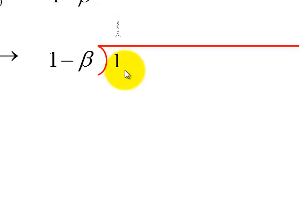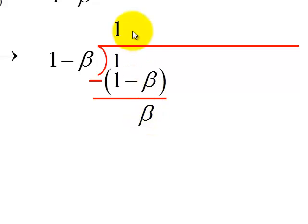So our first term is just going to be 1. That leads to a quantity of 1 minus beta with a minus sign in front. When you finish that subtraction, that leads to a beta. So in the quotient, we're going to add a beta term.